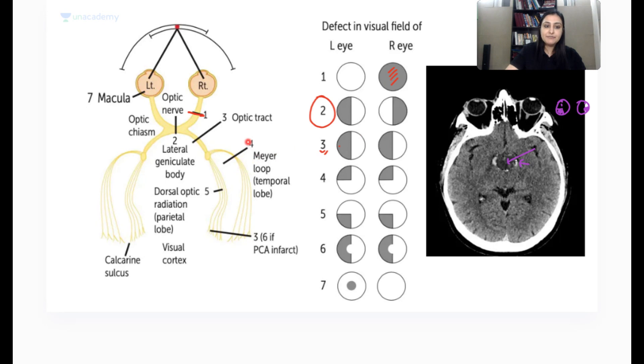So this is number three, this is the right optic tract which is going because the deficit is on the opposite side. So contralateral homonymous hemianopia is what you, homonymous hemianopia.